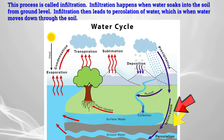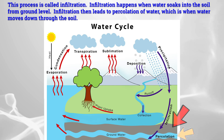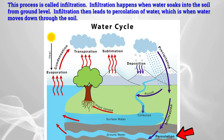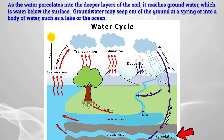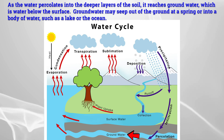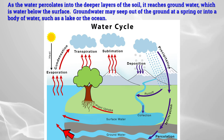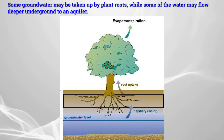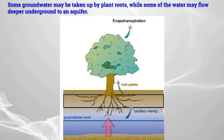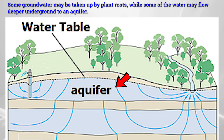Infiltration happens when water soaks into the soil from ground level. Infiltration then leads to percolation of water, which is when water moves down through the soil. As the water percolates into the deeper layers of the soil, it reaches groundwater, which is below the surface. Groundwater may seep out of the ground at a spring or into a body of water, such as a lake or the ocean. Some groundwater may be taken up by plant roots, while some of the water may flow deeper into the ground to an aquifer.